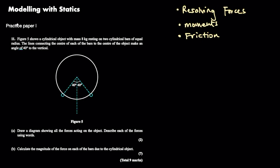This question is from practice paper I from the Edexcel practice papers. It says figure five shows a cylindrical object with mass eight kilograms resting on two cylindrical bars of equal radius. The lines connecting the center of each of the bars to the center of the object make an angle of 40 degrees to the vertical. Part A says draw a diagram showing all of the forces acting on the object and describe each of the forces using words.